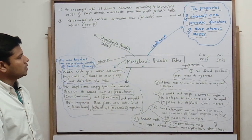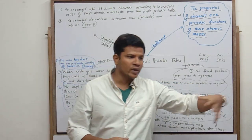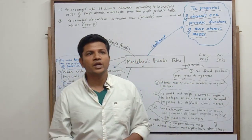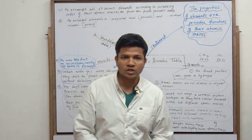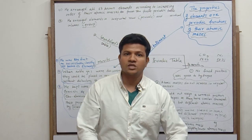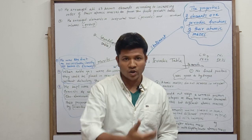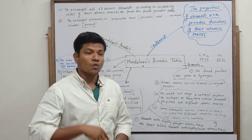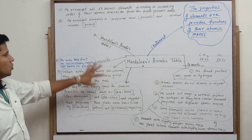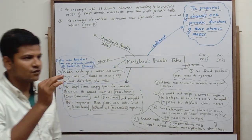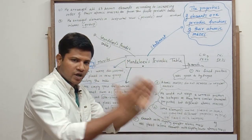Now let us look at the merits. This is the first time we are studying someone's merits. It took years and years for these scientists to even guess the properties of elements and to arrange them — it was a lot of hard work. The first merit of Mendeleev's periodic table is that he was the first to successfully arrange all the known elements into a table.